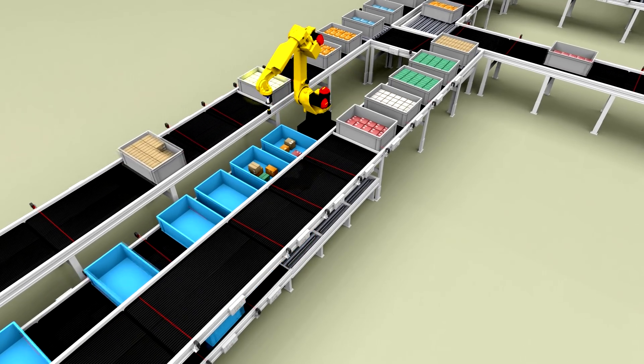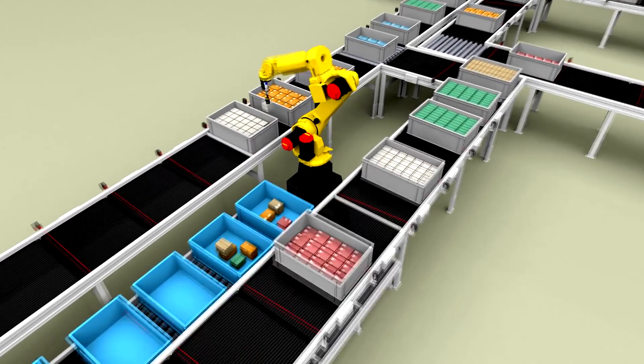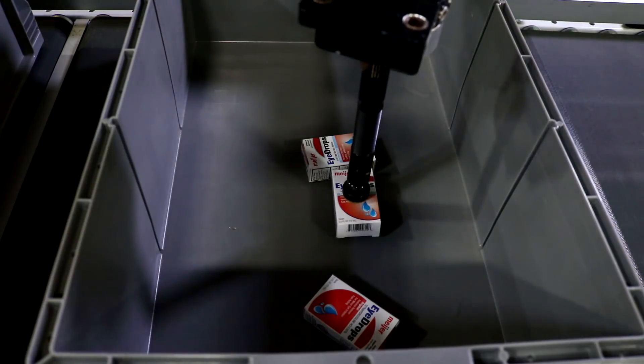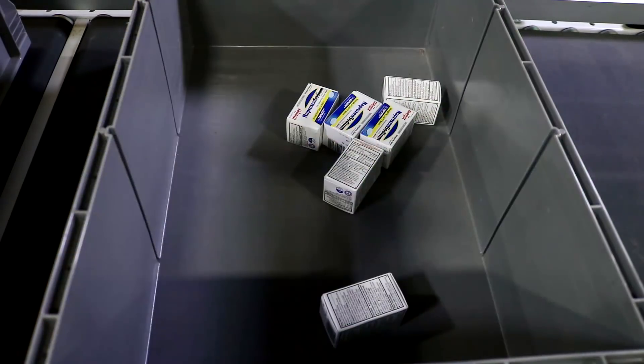At the same time, empty order totes flow into position for loading. When all items are picked, it flows out of the robotic pick cell, then to packing and shipping.